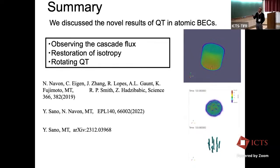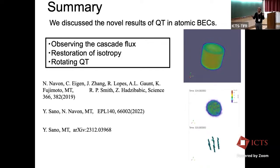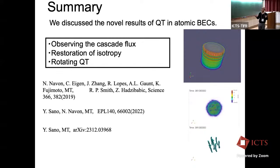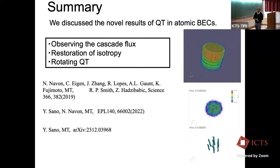Let me summarize. We discussed novel results of quantum turbulence in atomic BECs: the observation of the cascade flux, the restoration of isotropy, and rotating quantum turbulence. Thank you very much for your attention.